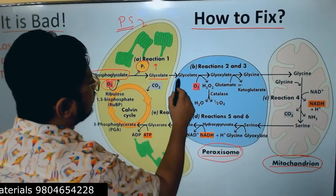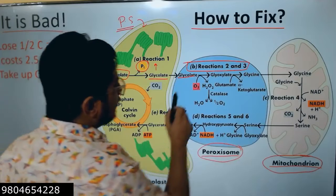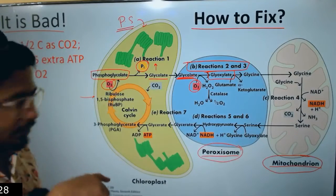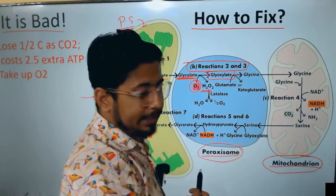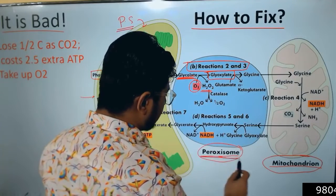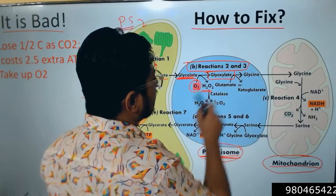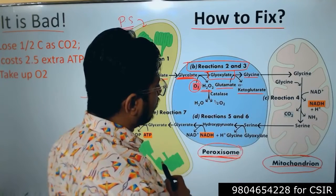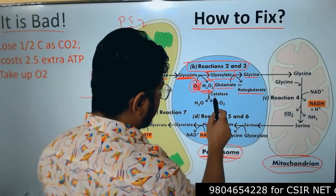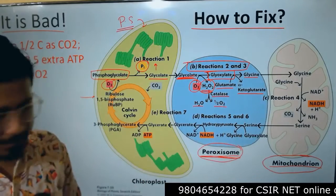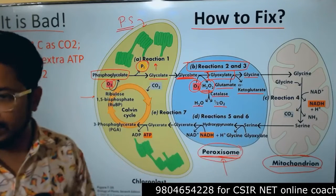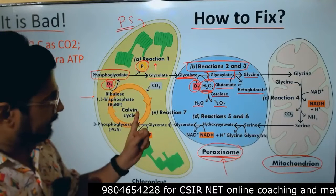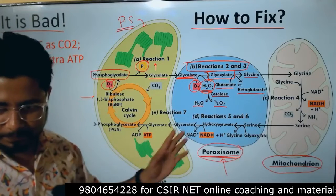In reactions two and three inside the peroxisome, glycolate is converted to glyoxylate. Another molecule of oxygen is used, and oxygen is reduced to hydrogen peroxide, which is toxic. Hydrogen peroxide is handled in the peroxisome because it is the only organelle equipped to deal with it — catalase in the peroxisome can break hydrogen peroxide into water and oxygen. No other part of the cell can handle hydrogen peroxide without damage.